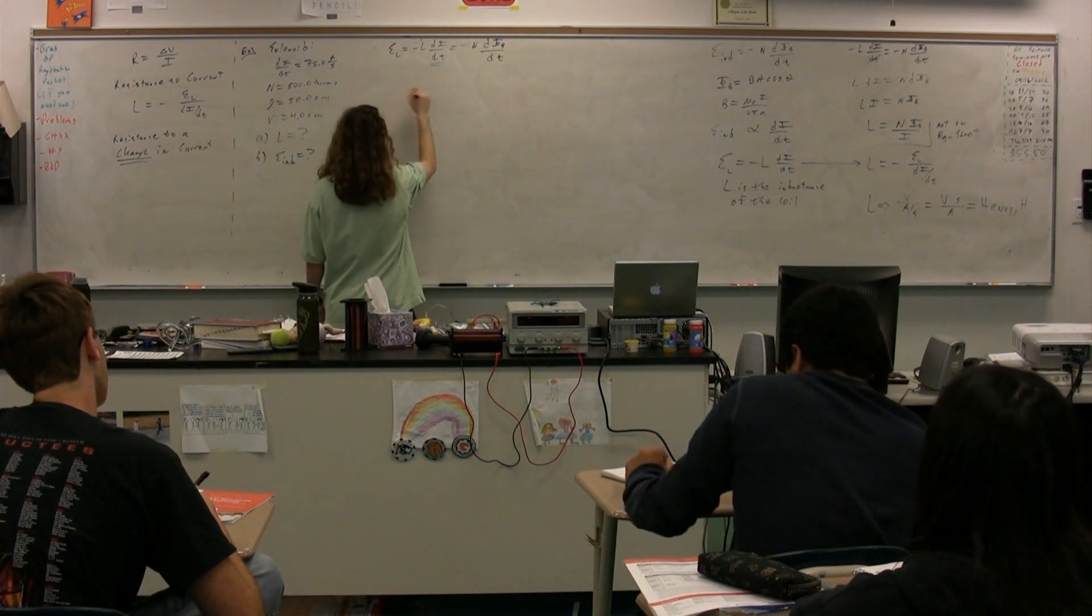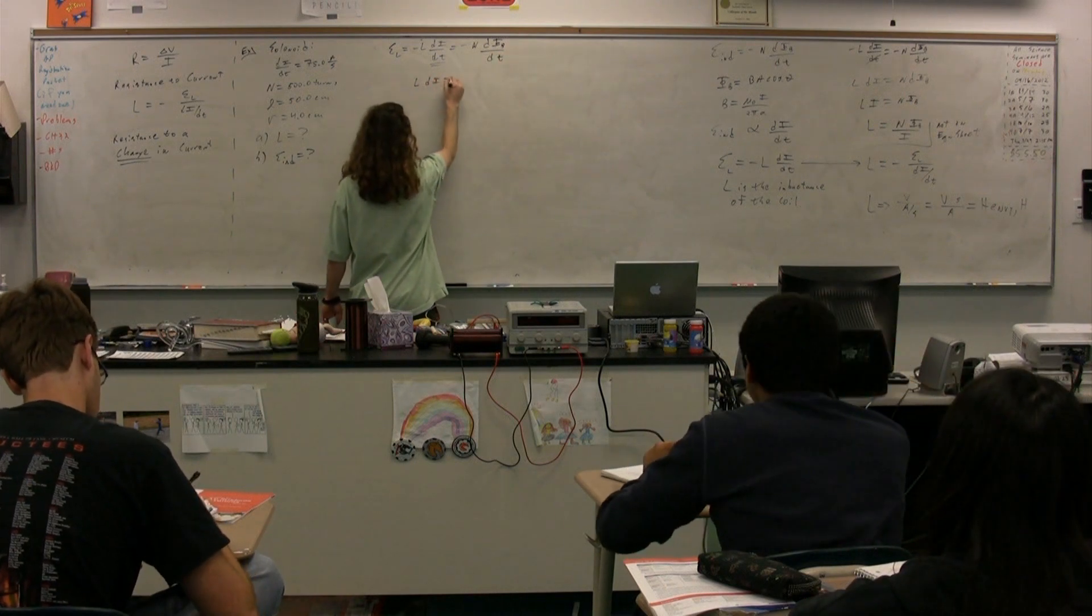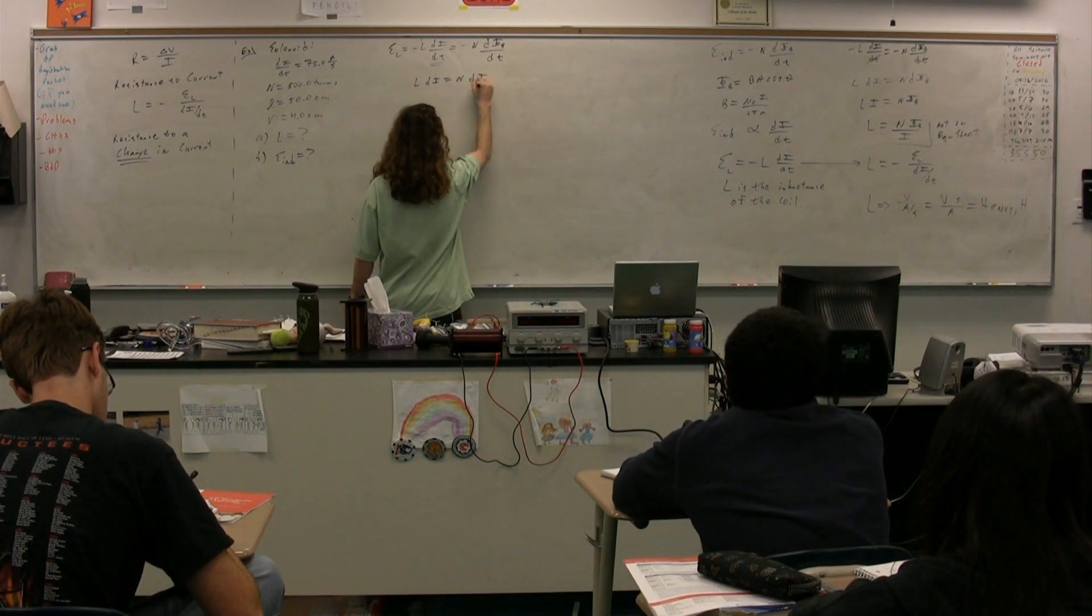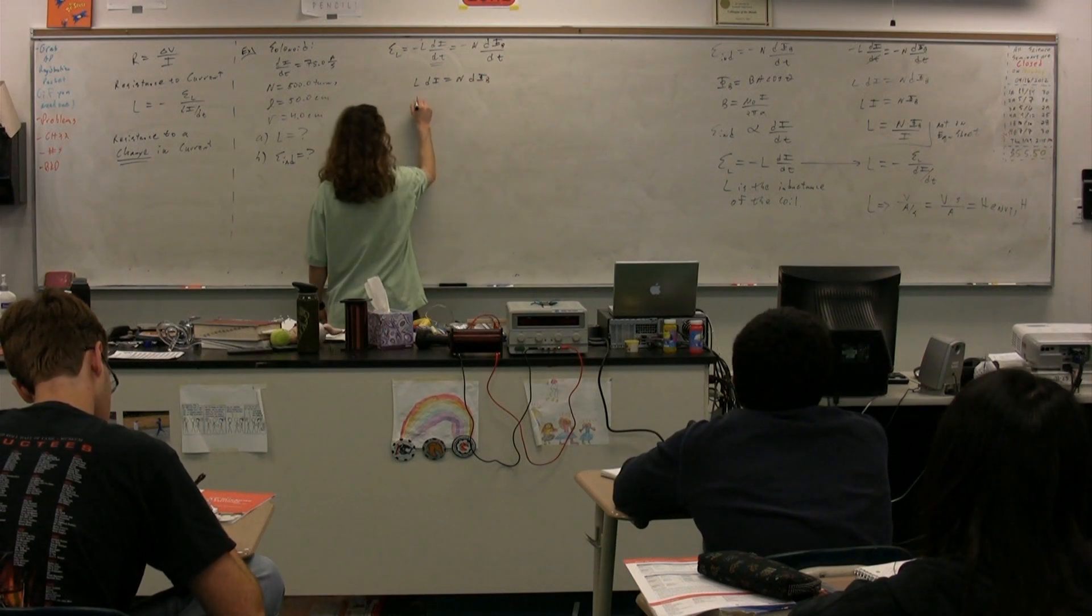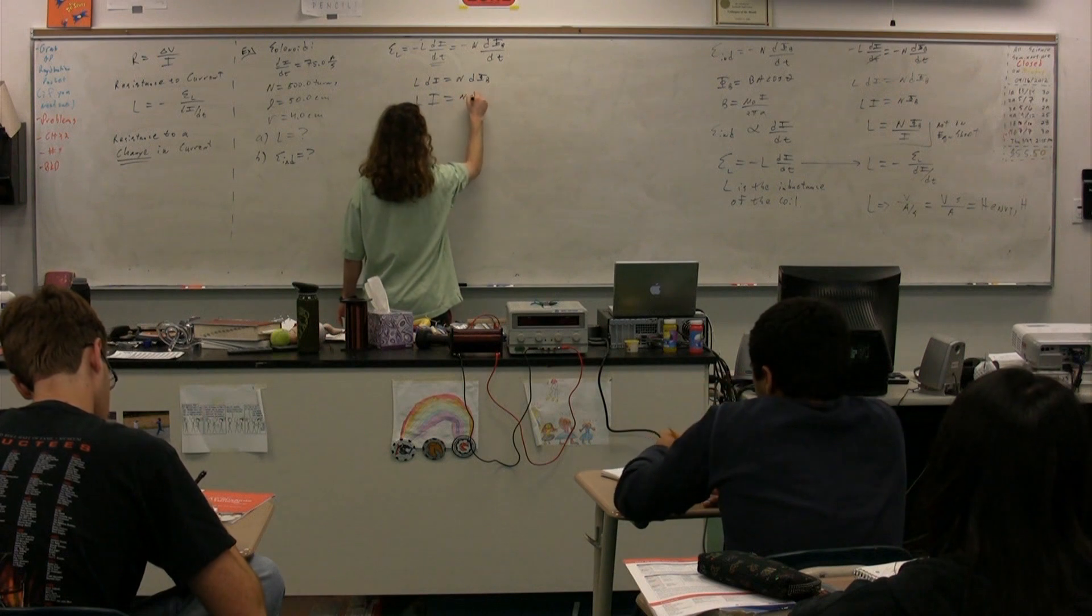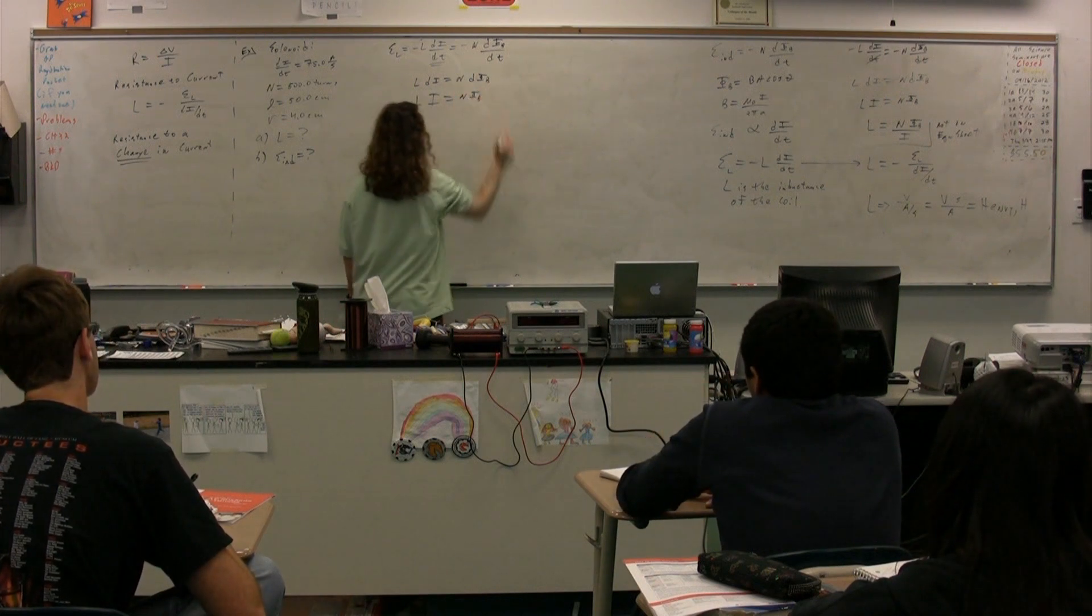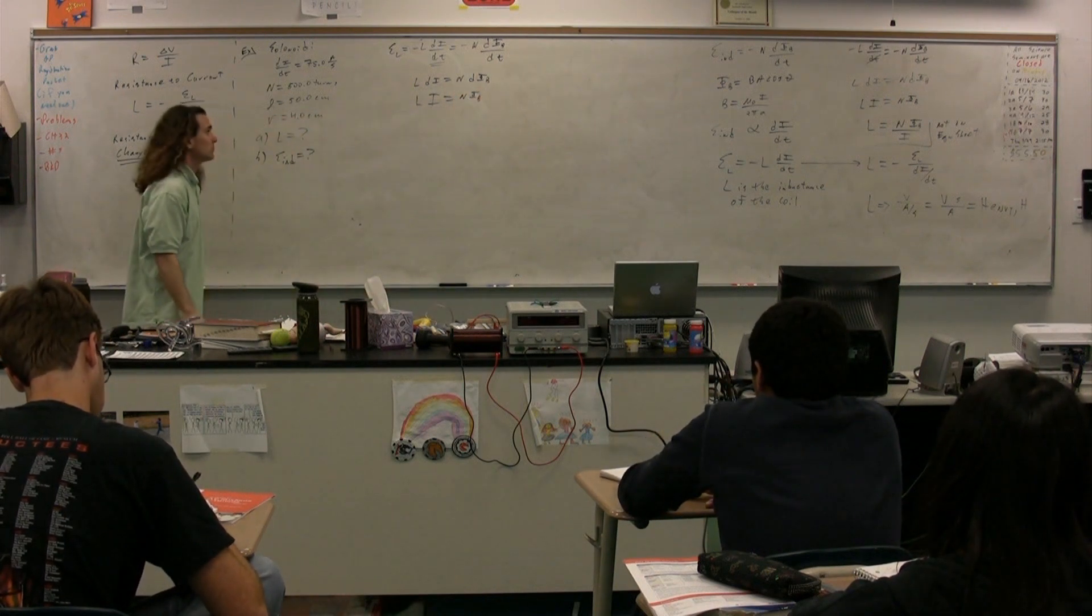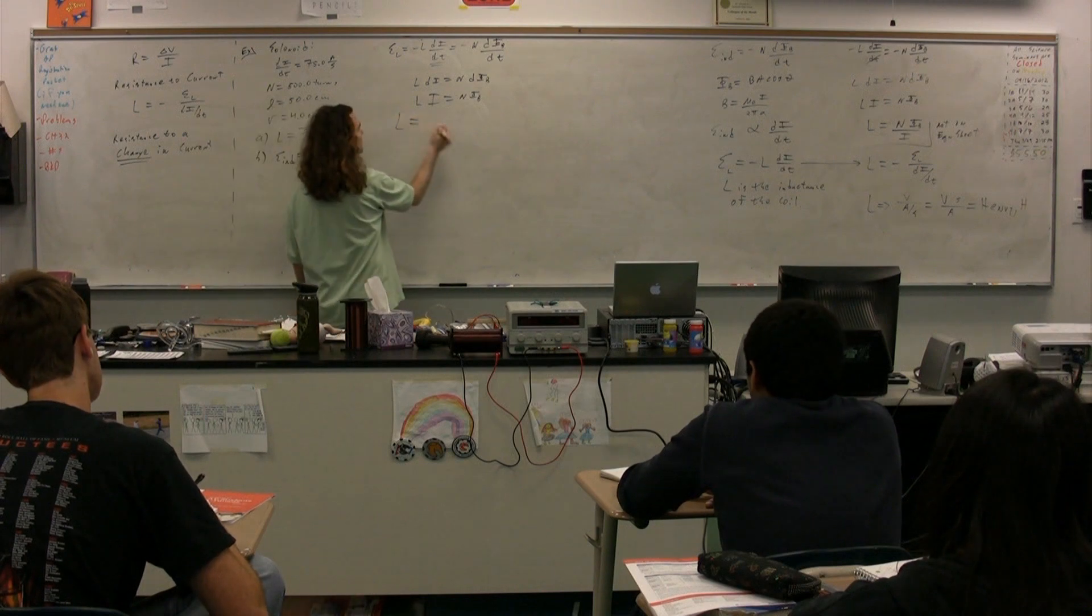You can take the negative out. We can take the dt out. We get L di equals n times derivative of the d flux here. Take the integral of both sides. You get L times i equals n times the magnetic flux.